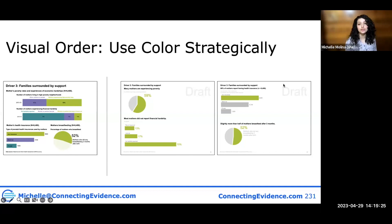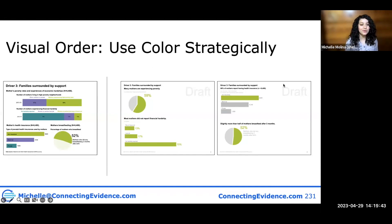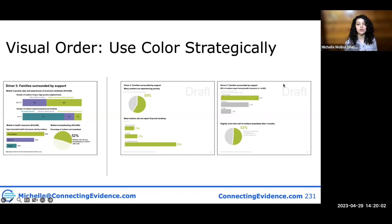Another thing to keep in mind is to use color strategically. When we see different colors, our brains associate them as belonging to different groups. So on the figure on the left-hand side, those purples might make your audience stop and think — are these purples the same group, or is that purple trying to tell me something? Are the greens all grouped together? Instead of having your audience think about that, make sure that unless you're trying to convey something with color, you do not use it unnecessarily.